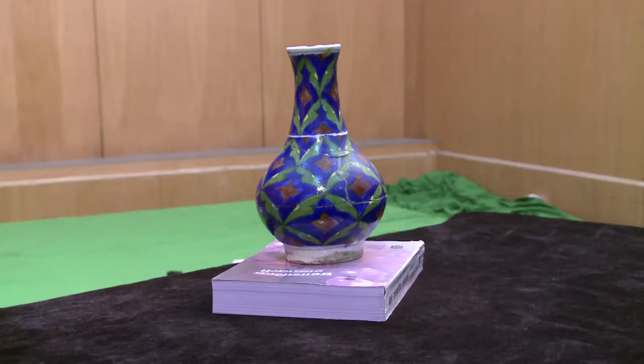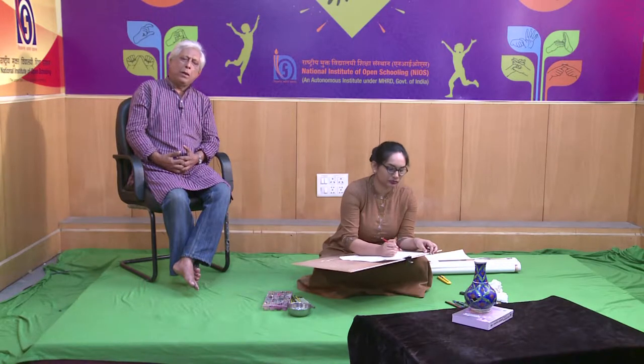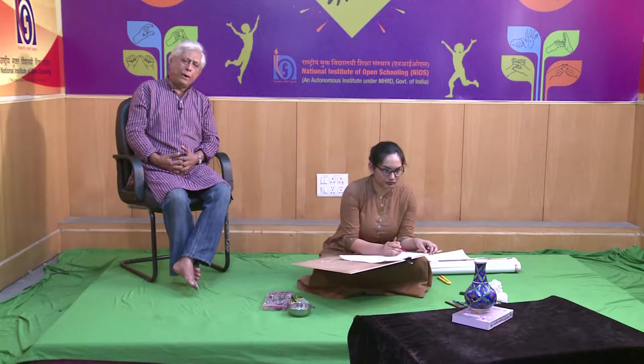So here we have chosen one flower vase and a book. It is placed on a table, flat table with black drapery on it.